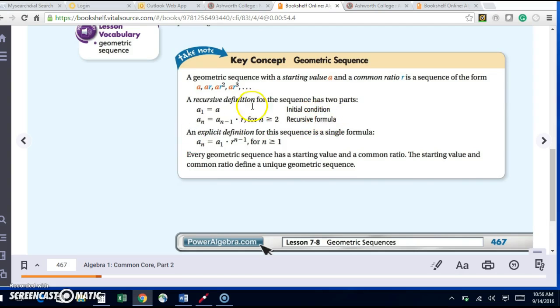And then the recursive formula would be A sub n equals A sub n minus 1 times R for n greater than or equal to 2. Of course n cannot equal 1 because then we have A sub 0, and there's no A sub 0. The first term is A sub 1, so that's why we have to start with 2.